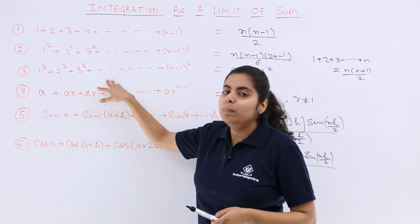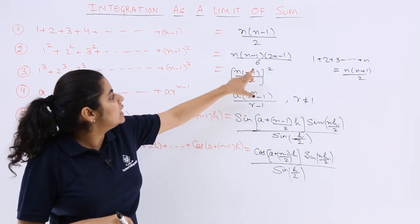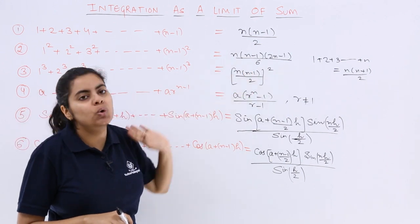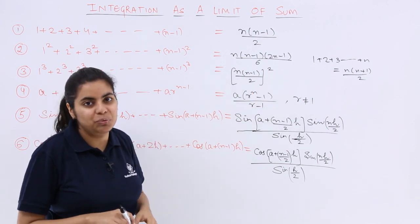Next is 1 cube plus 2 cube plus 3 cube till n minus 1 whole cube. So it is n into n minus 1 by 2 whole square. That is n square multiplied by n minus 1 whole square upon 4.